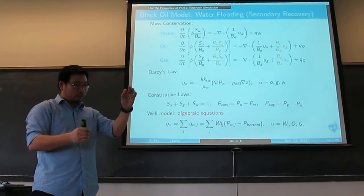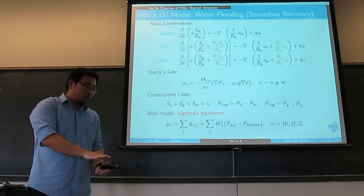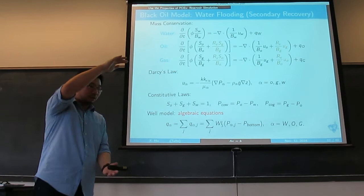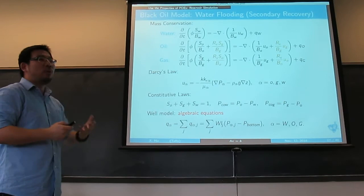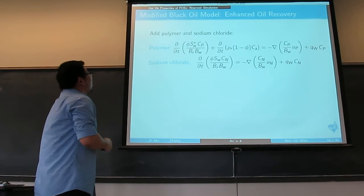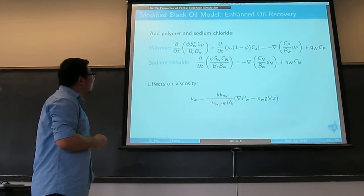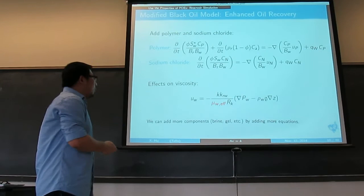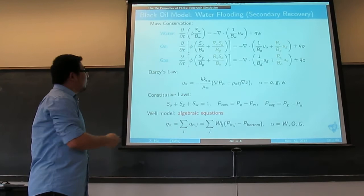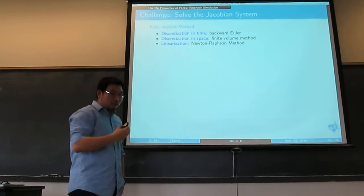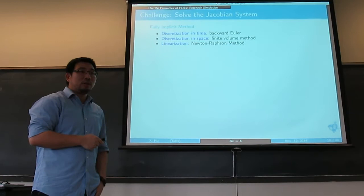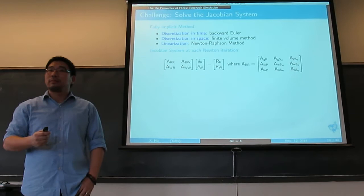The model I use is the black oil model — mass conservation for three phases (water, oil, gas), Darcy's law — where flow rate in porous media is proportional to the pressure difference — and constitutive laws. The saturations sum to one, you have capillary pressure between immiscible fluids, and well models: algebraic equations for injection and production wells where flow rate is proportional to the difference between well pressure and bottom-hole pressure. The most challenging part is solving the Jacobian system at each Newton iteration.